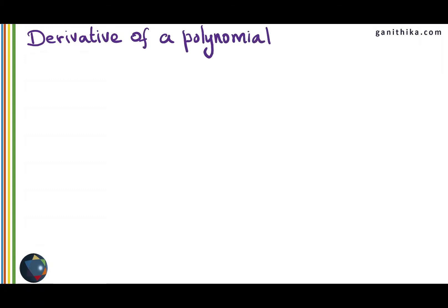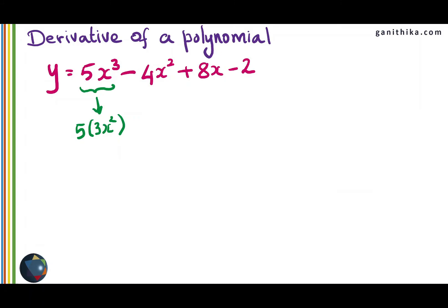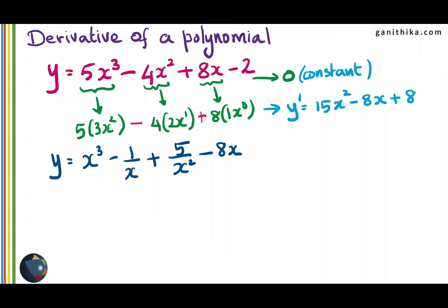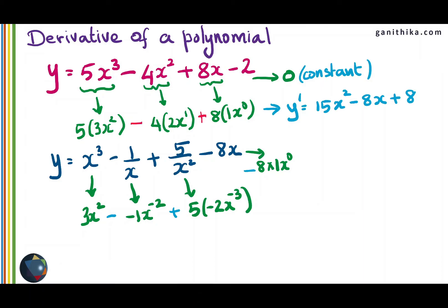Let's use this formula to find the derivative of a polynomial. For example, let y equal 5x^3 minus 4x^2 plus 8x minus 2. We find the derivative of each term: 5x^3 becomes 5 times 3x^2, which is 15x^2. 4x^2 becomes 4 times 2x, which is 8x. 8x becomes 8, and minus 2 becomes 0 as it is a constant. Inserting the signs as given, y dash equals 15x^2 minus 8x plus 8. We do not write the zero for the constant term. Another example follows with term-by-term differentiation, inserting all signs and simplifying to give the derivative of the function y.